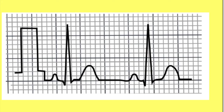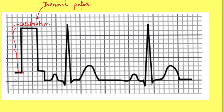Here this picture is showing a lead-2 ECG. This is the thermal paper over which ECG is recorded. This portion shows the calibration, that is the voltage recorded as some distance on paper. The standard calibration is that 1 millivolt is recorded as 1 centimeter on thermal paper. This portion is the recording of the spread of the electrical impulse in the heart, showing two electrical impulse recordings. Let us focus on the recording of one electrical activity.